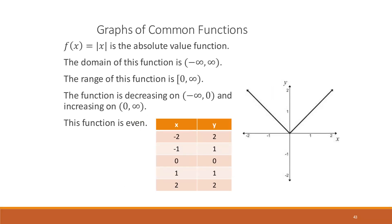So this is the parent function. We call a parent function the simplest form of a particular type of function. This is the parent function of the absolute value function. The simplest form of the absolute value function is f of x equals the absolute value of x. You can see the domain, range, decreasing and increasing intervals, and some points for the function. If I was preparing for a test, I would make sure I understood those points because it's easier to do the transformation if you have a starting point.